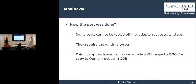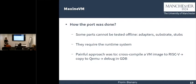However, some parts cannot be tested offline — for example, the adapters, the substrates, the stubs — because they require the whole managed runtime system to be running. So the approach to this was to cross-compile a VM image for RISC-V. The VM image is basically a binary of the JVM, and then copy it to QEMU running in full system emulation mode and manually debug in GDB.